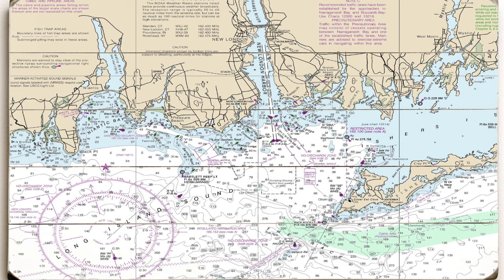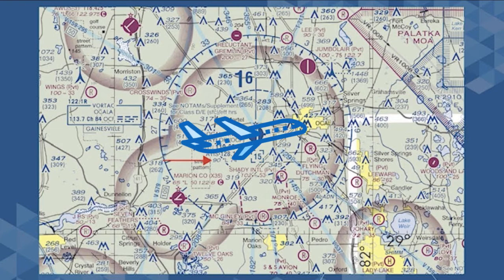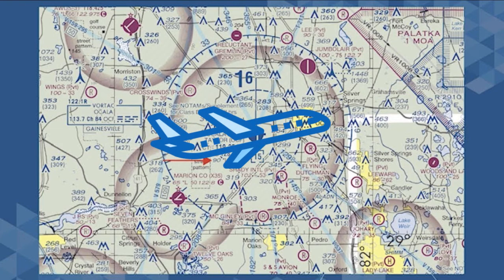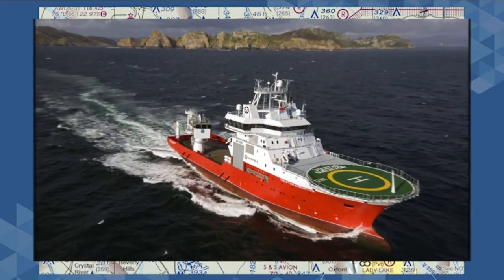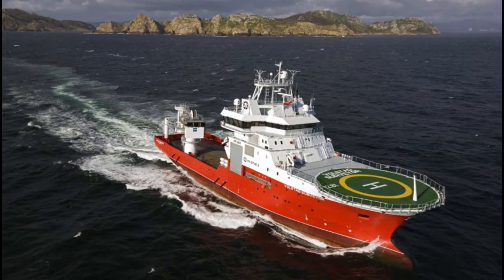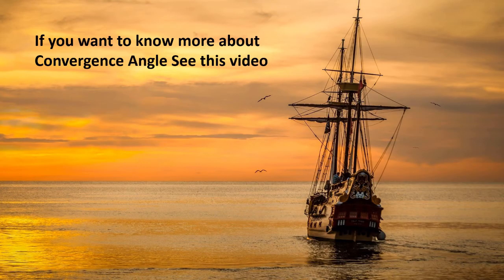The same is the case for aeroplanes — they use gyro as well as magnetic compass. But for surveyors, we need to know the true as well as grid heading, so knowing the convergence angle is very essential. If you want to know more about convergence angle and how to calculate it, please see one of my previous videos — link in the description.